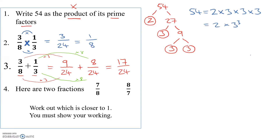Number four is the hardest one on the page. Here are two fractions: seven eighths and eight sevenths. Work out which one is closer to one. You must show your working. These are not easy fractions to know — it's not like three quarters which we know is 0.75. So you've got to work out what these fractions are as decimals. How do we convert from fractions to decimals? We do what it says.